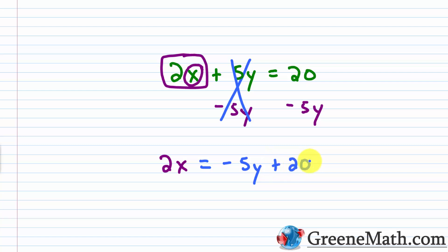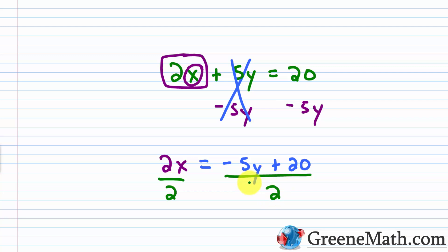To get x by itself, I just have the 2 that's multiplying x, so I divide both sides of the equation by 2. On the right side, I'm dividing the whole expression — negative 5y plus 20 — by 2.